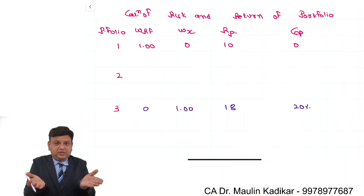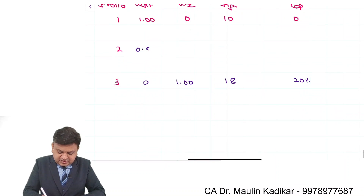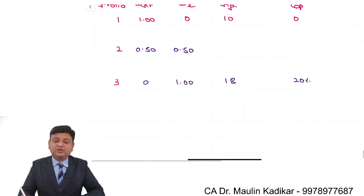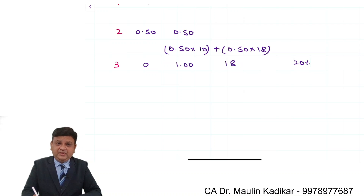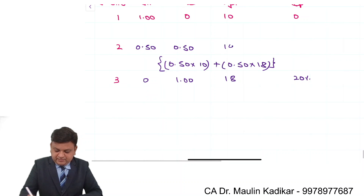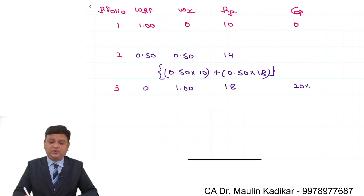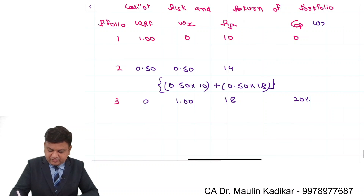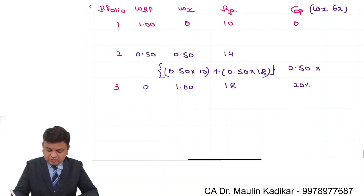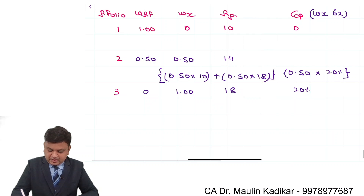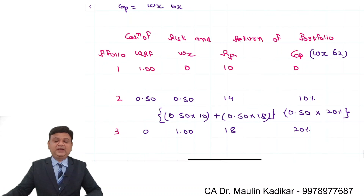For Portfolio 2, investment is made in both securities in equal proportion: weight of X is 0.50 and weight of RF is also 0.50. The return of the portfolio is computed as the weighted average: 0.50 × 10 + 0.50 × 18 = 5 + 9 = 14%. For standard deviation, we apply the formula WX × Sigma_X: 0.50 × 20% = 10%. So the risk of the portfolio is 10%.